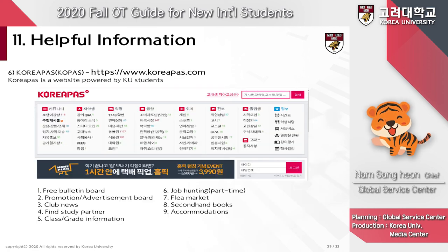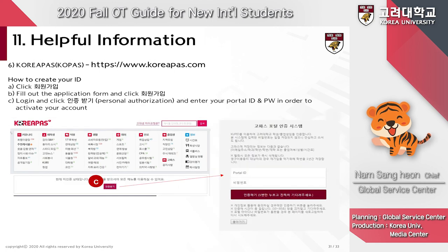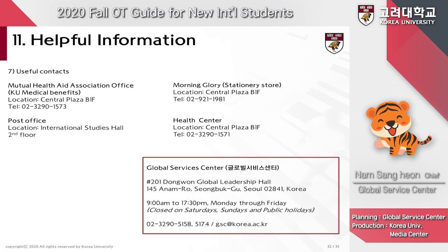Here is another helpful tip. GoPass is a website powered by Korea University students and accessible only with an official KU login. It has a free bulletin board filled with information for KU students — you can find study partners, look up information on certain courses, look for secondhand books, find accommodations, and more. Follow steps A, B, and C to register and login. The next slide shows some useful contacts. Welcome again, and we hope you have a wonderful freshman year. Thank you.